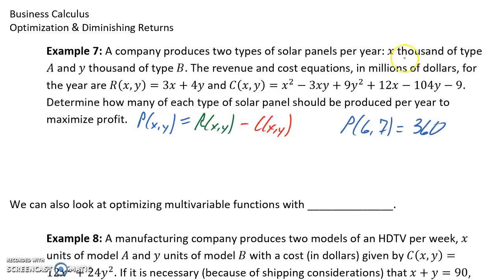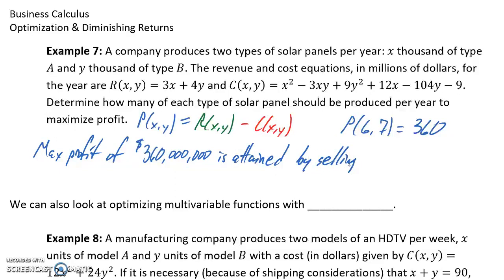But then in interpreting this, x and y are both in thousands, and revenue and cost are provided by these given functions in millions. So what this would mean is that our maximum profit of 360 million is attained by selling 6,000 of type A and 7,000 of type B.